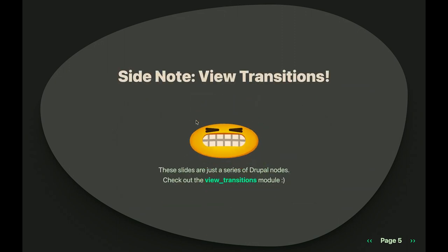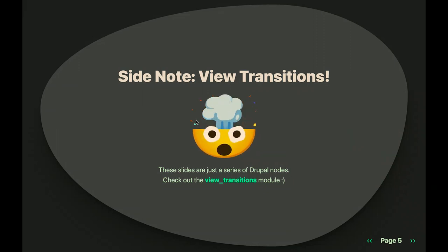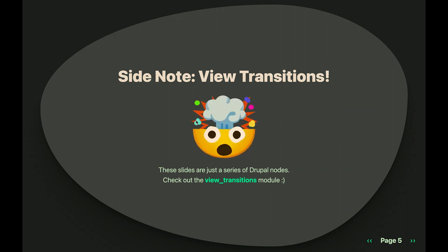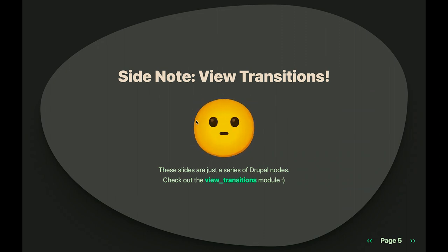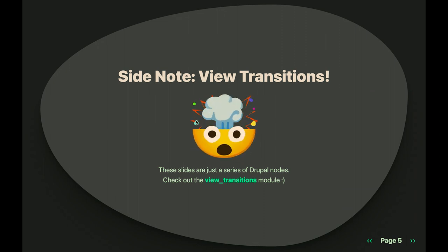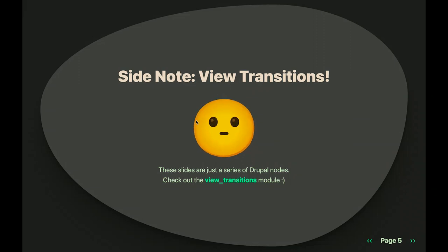Just a fun little side project I've been working on: there's a Drupal View Transitions module, and these slides are actually just a Drupal site. These are all Drupal nodes, and it's using the HTML View Transitions API for animations. It's fun.